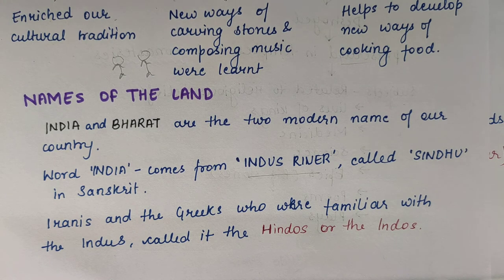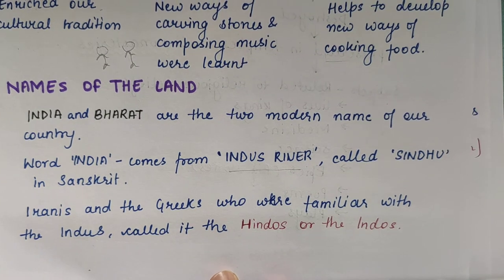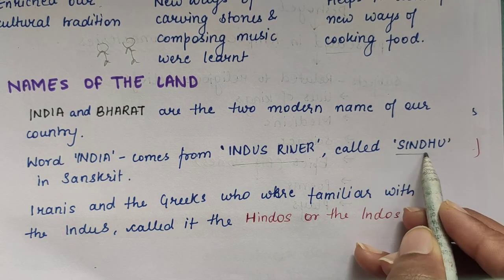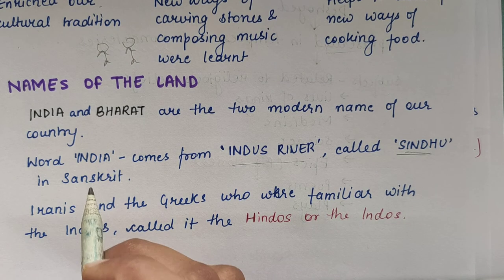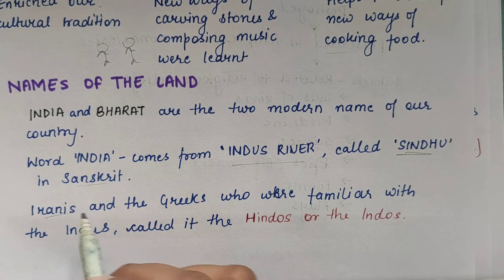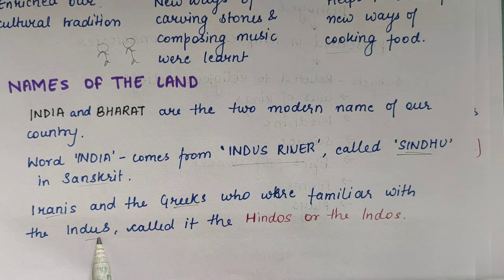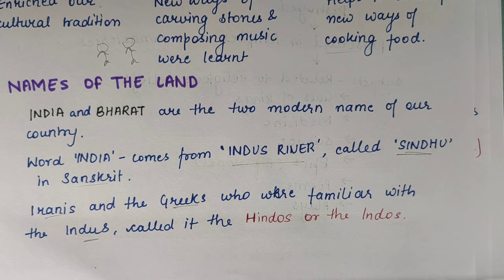Indus River is called in Hindi and Sanskrit 'Sindhu' river. So the Iranians and Greeks were very familiar with this Indus river, and they called it 'Hindos' or 'Indos' — it was a little different in their pronunciation. So they called it Indus, and that is why this name originated — the land to the east of the Indus River became known as India.